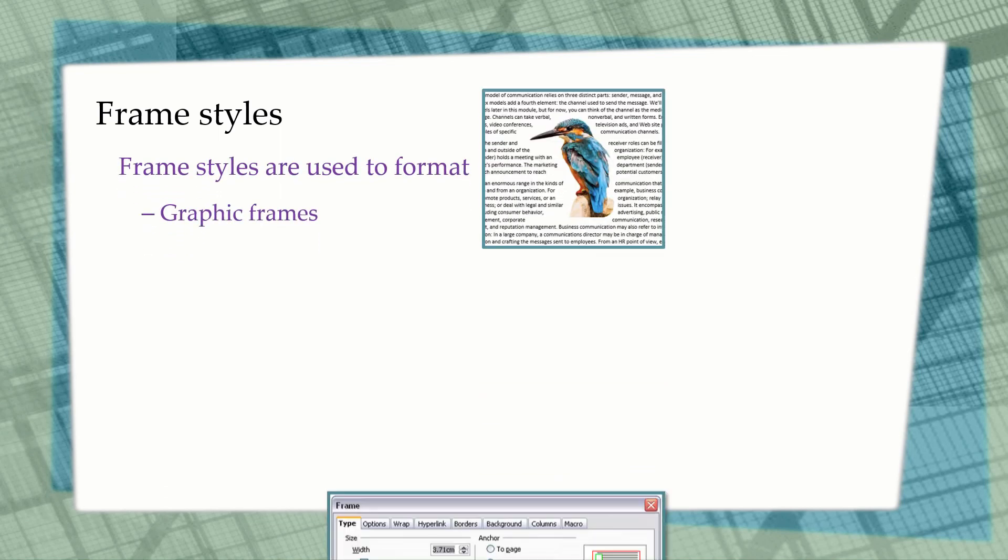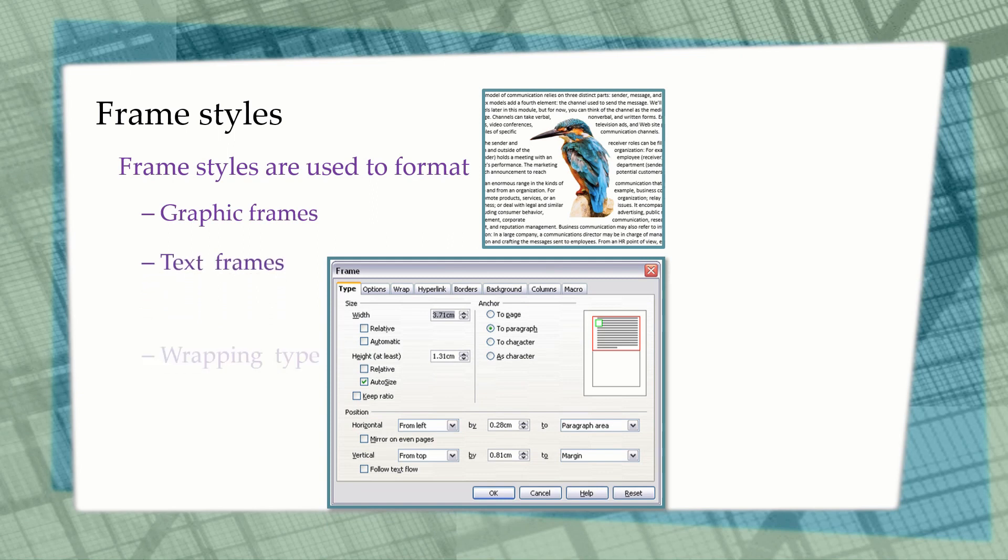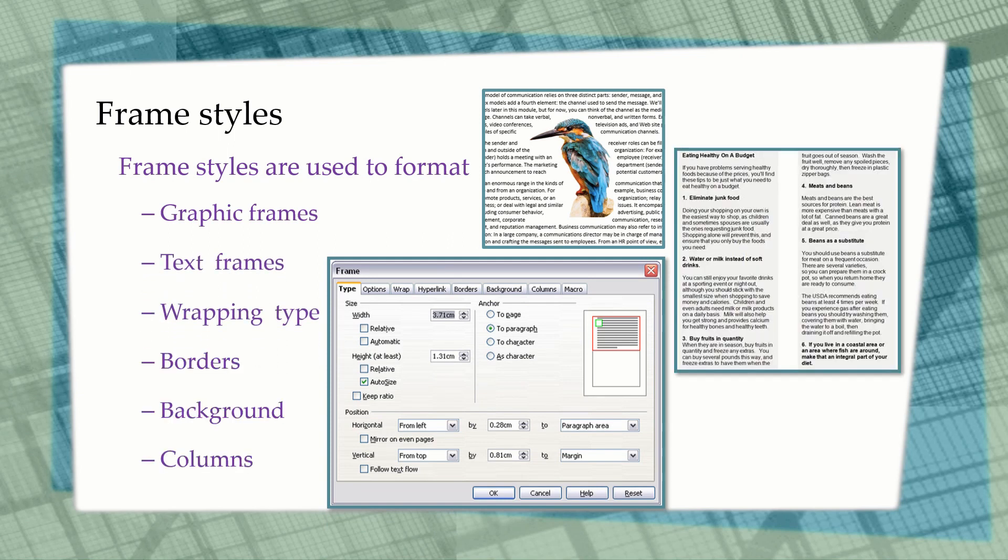The fourth type of style is the frame style. Frame styles are used when an object is added to your document, which automatically encloses your picture within a frame. Frame styles format graphic frames, text frames, the type of wrapping, borders, backgrounds, and columns.